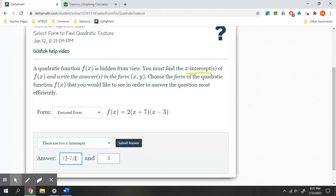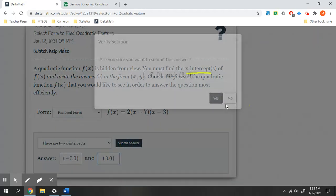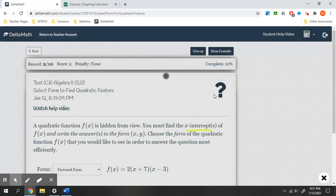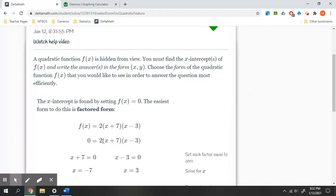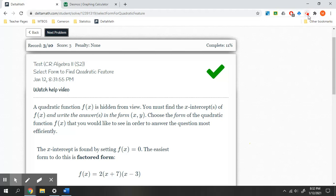And we have to write this in an ordered pair, so make sure that you look at instructions. This one does specify make sure you write those in an ordered pair. So I have negative 7 and positive 3. All right, so you should have enough information for this. Don't be afraid to draw a graph, but choose the form that is going to give you that information.